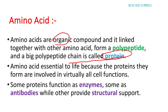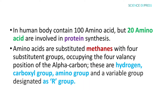Amino acids are essential to life because the proteins they form are involved in virtually all cell functions. Some proteins are involved in the formation of enzymes and antibodies, and others provide structural support for the body. The human body contains around 100 amino acids, but only about 20 amino acids are involved in protein synthesis. Examples of other amino acids include ornithine and histamine, but they are not involved in protein synthesis.